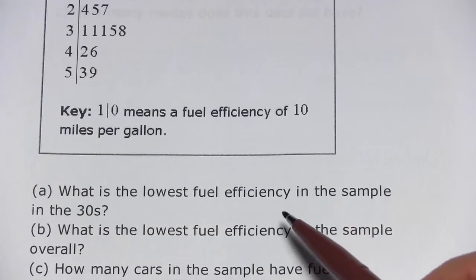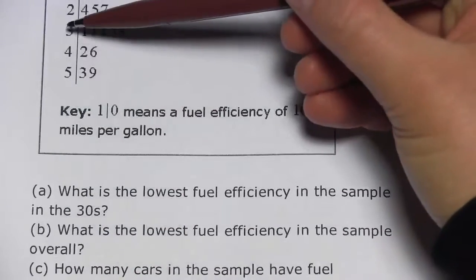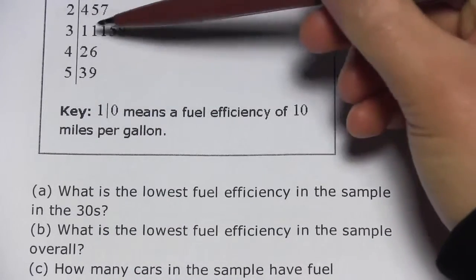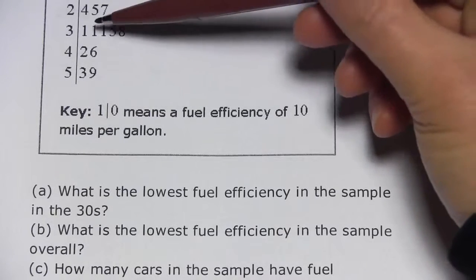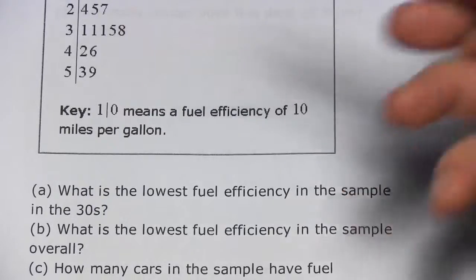It says, what is the lowest fuel efficiency in the sample in the 30s? So if I want to find the ones in the 30s, I just go up to where the 3 is here on the left, and I've got five different data points, three 31s, a 35, and a 38. Well, the lowest one is just 31.